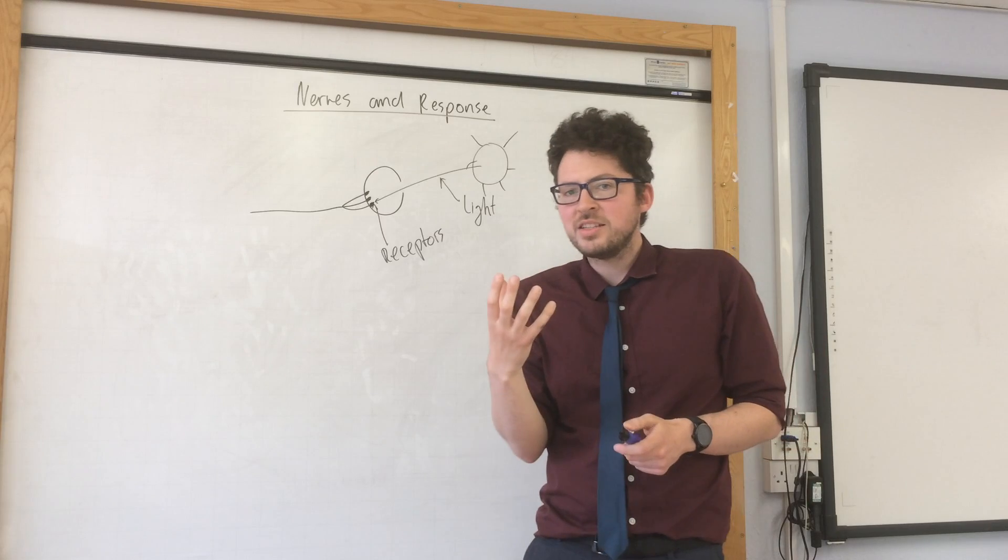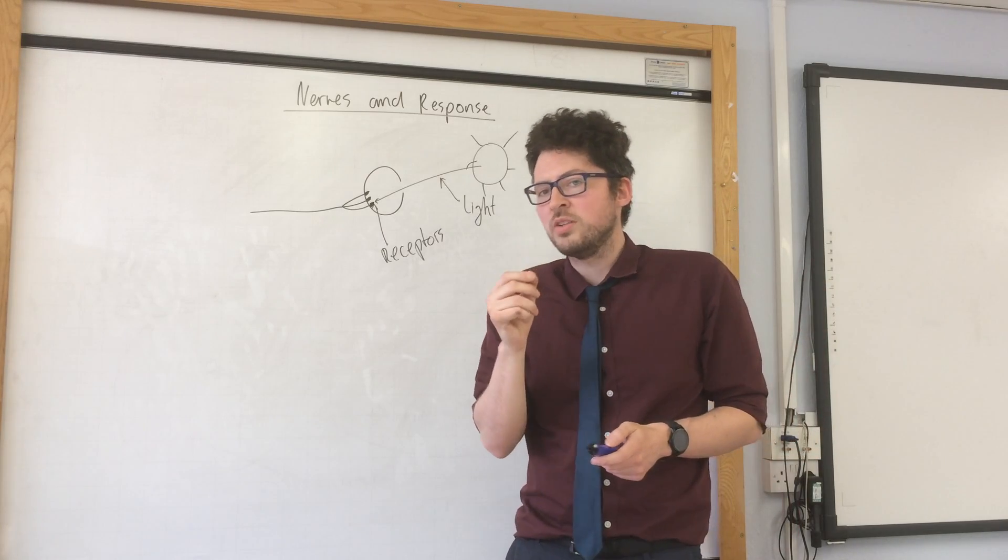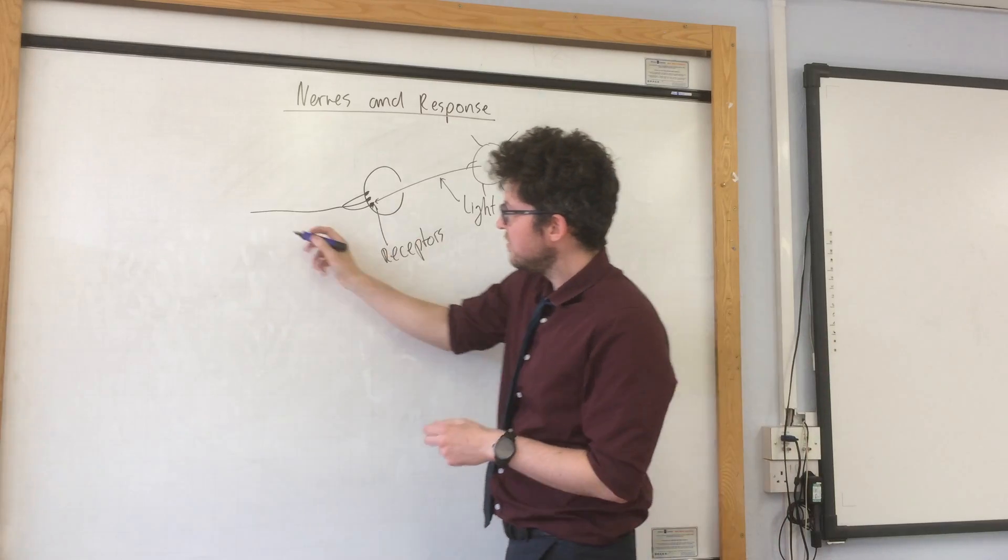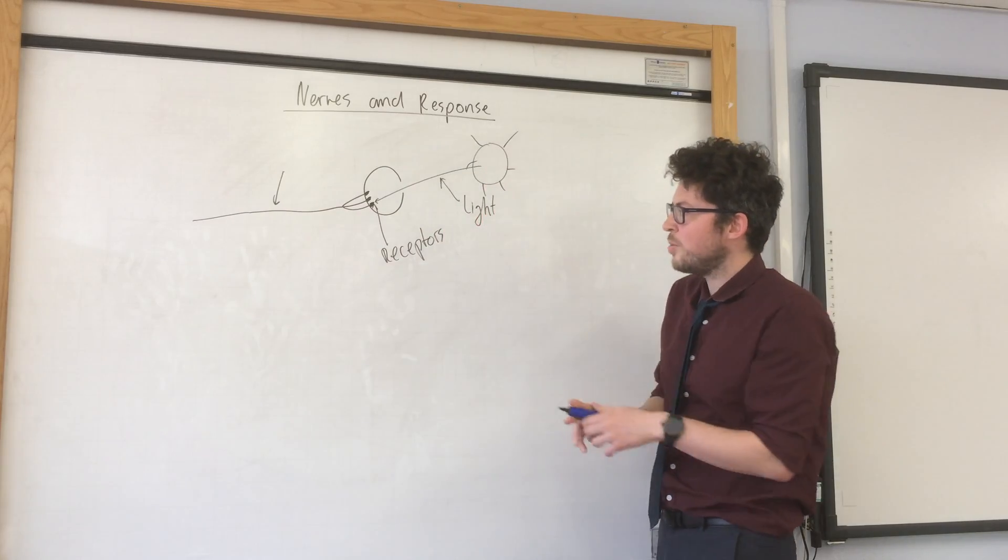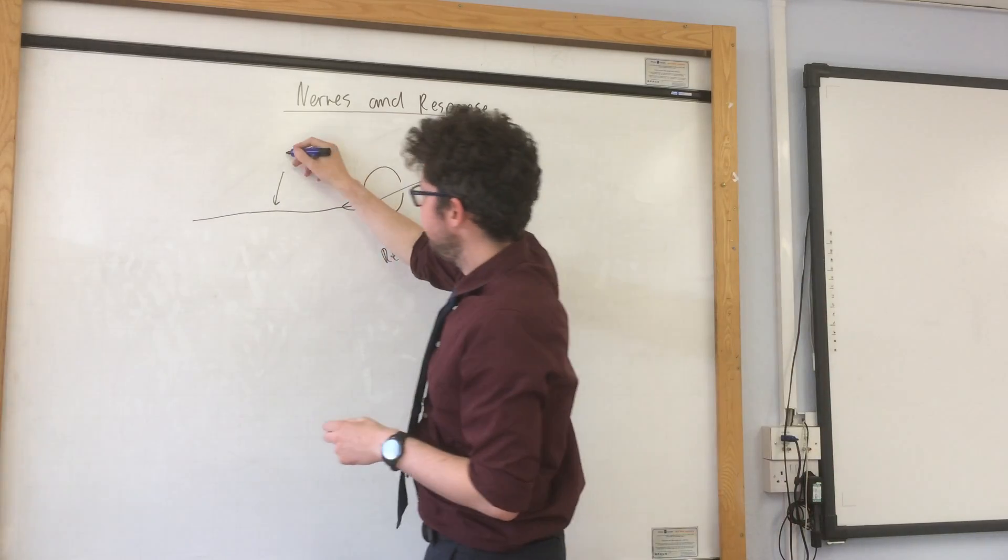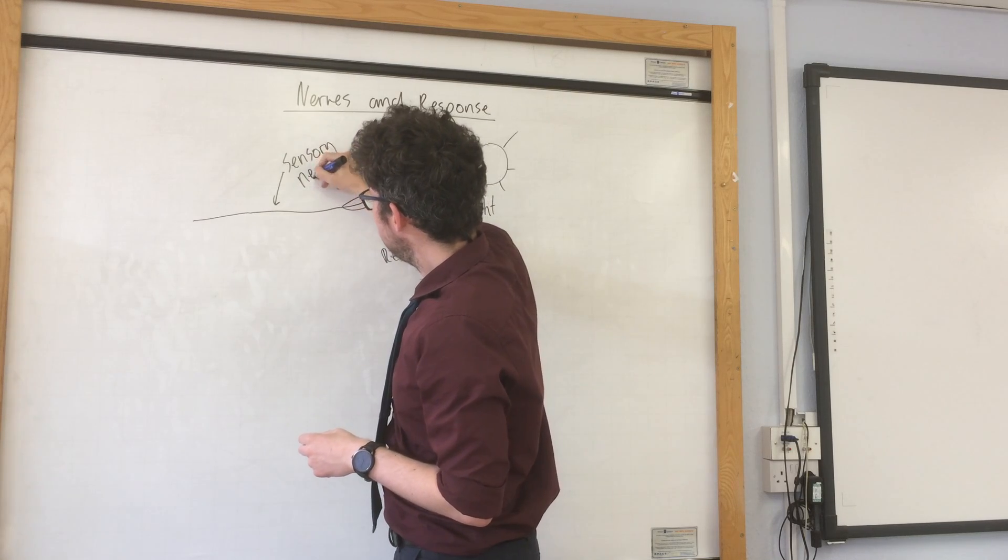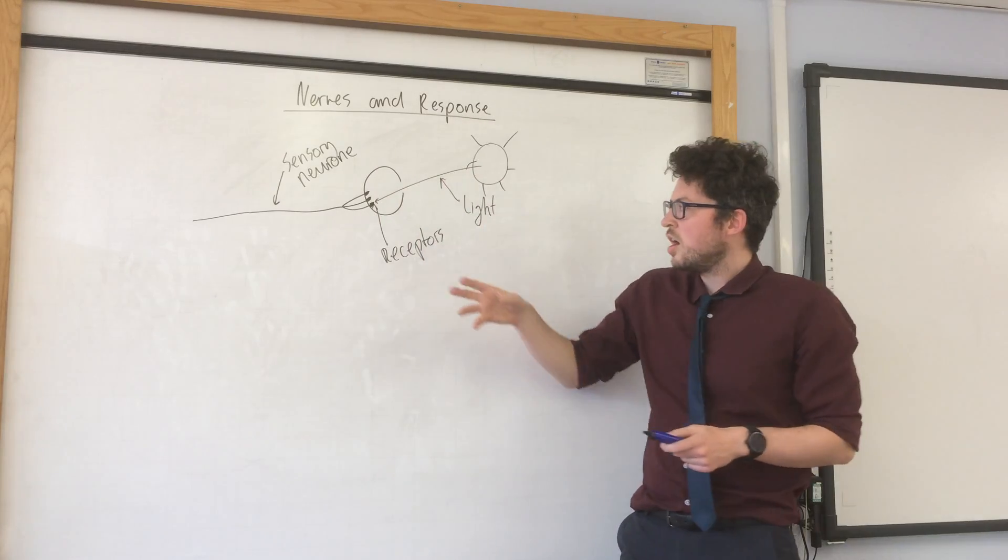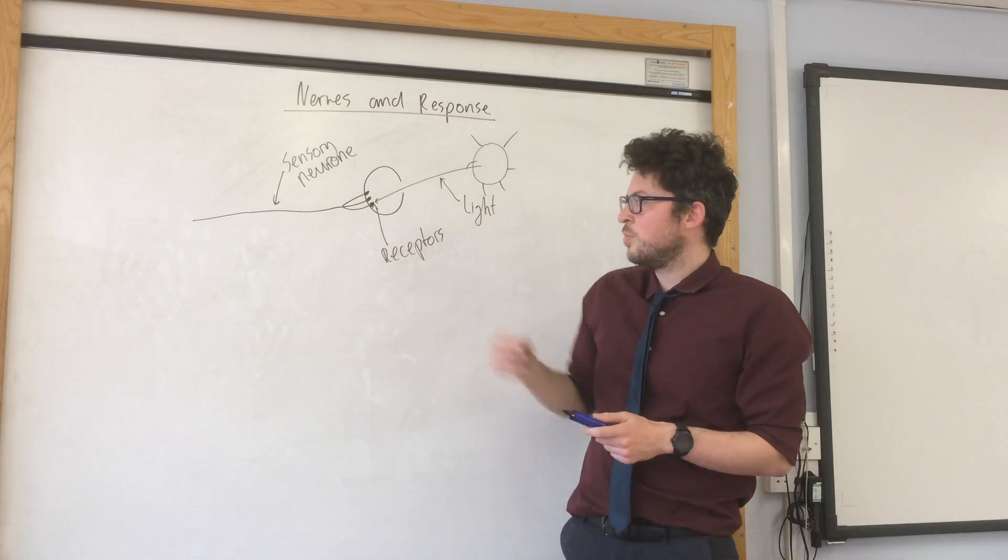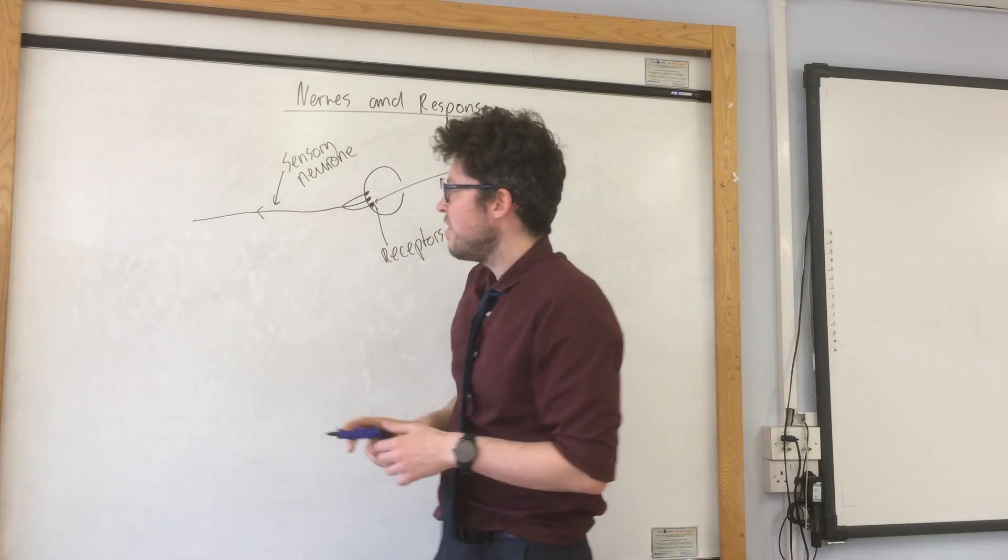And that initiates an electrical impulse which is carried by neurons. So this neuron here is called the sensory neuron because it's connected to a sense organ. That is a sensory neuron connected to a sensory organ which is the eye. And we have an electrical impulse travelling this way.